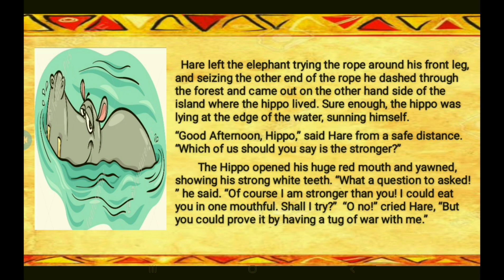Hare left the elephant tying the rope around his front leg, then dashed through the forest and came out on the other side of the island where the hippo lived. In the end, Hare was able to convince the elephant to play the tug of war. Now he left the elephant and went to the other side of the island to find the hippo.